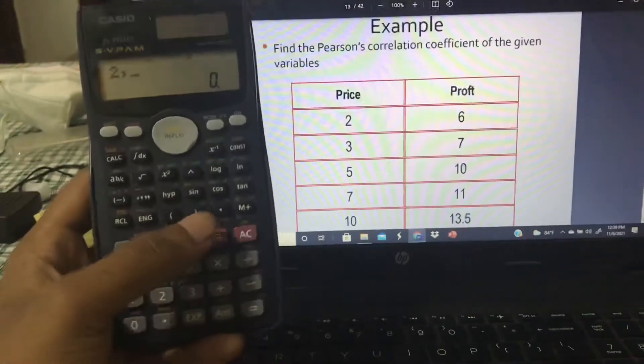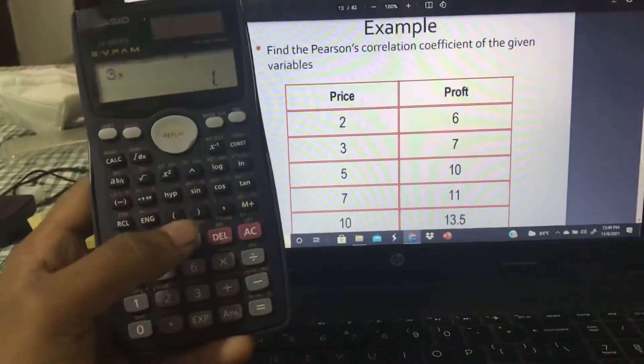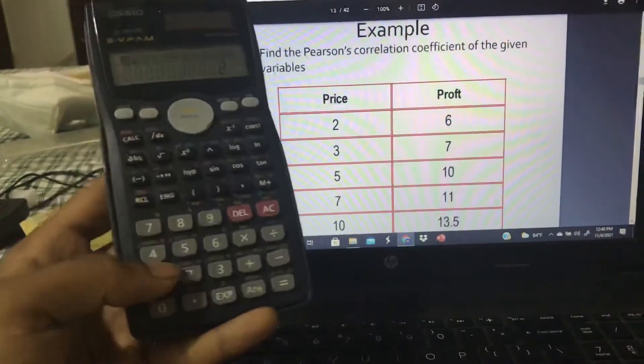Price 2, comma, profit 6, M plus. Price 3, comma, profit 7, M plus. Price 5, comma, profit 10, M plus.